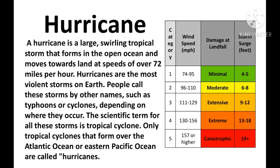A typhoon is a tropical storm in the region of the Indian or western Pacific Ocean. You can see a wind speed mile per hour chart at the right side of the slide.